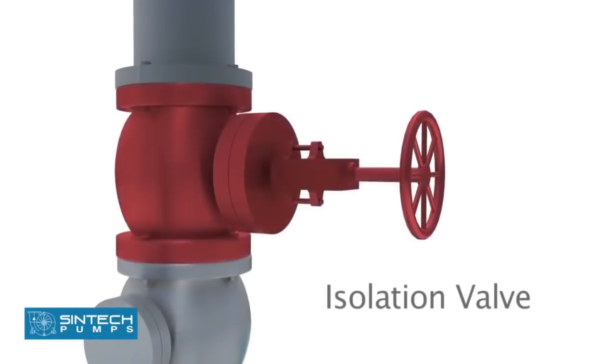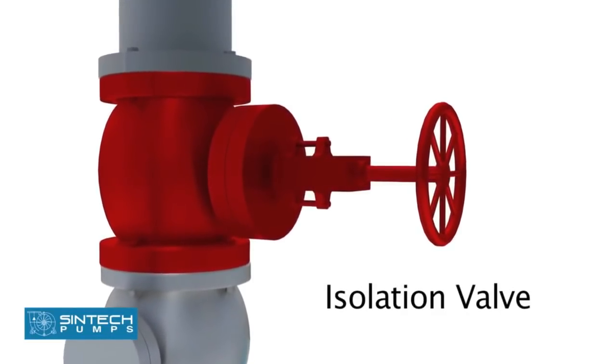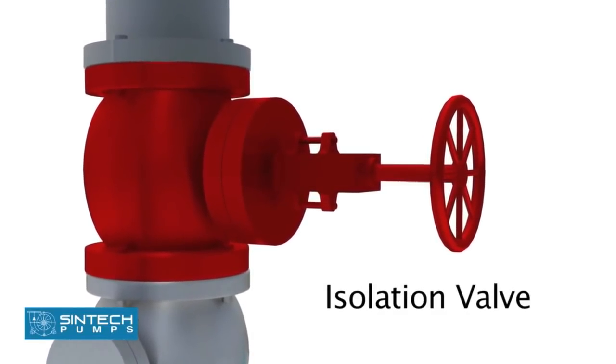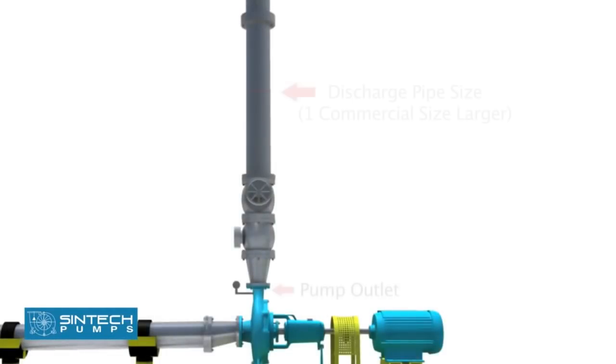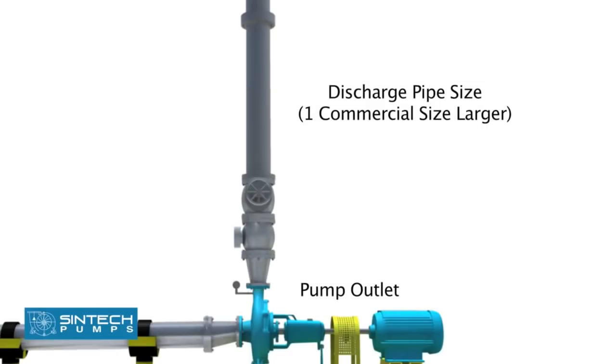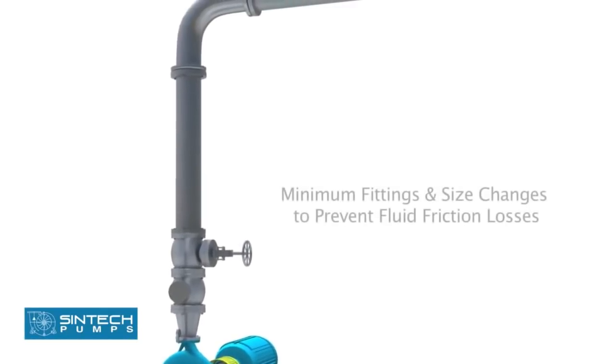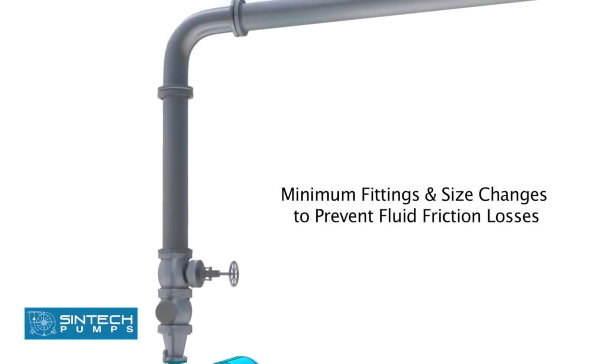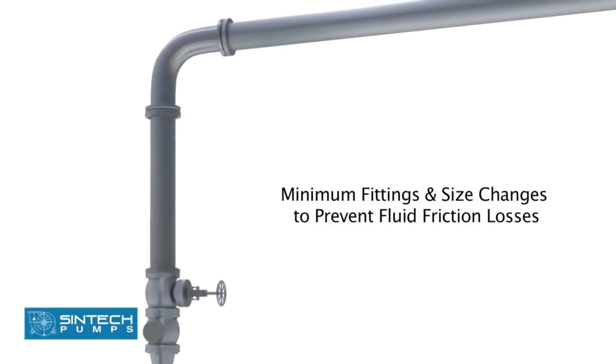The isolation valve is provided downstream of the check valve so that these can be taken up for servicing whenever required. Discharge pipe size should be at least one commercial size larger than the opening of the pump outlet. The number of fittings and size changes should be minimum to prevent fluid friction losses.